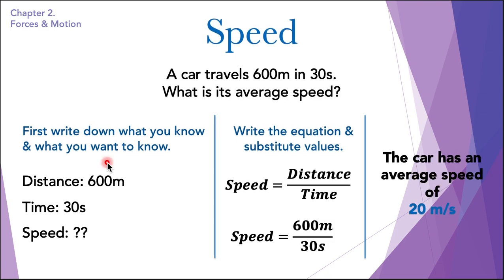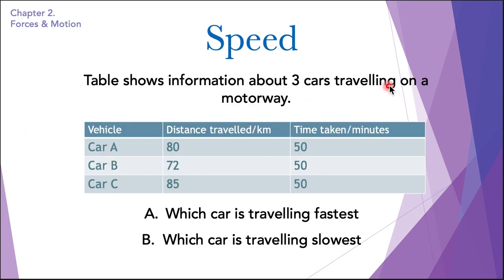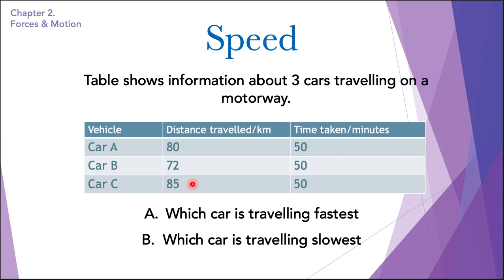Now let's answer a different type of question. A table shows information about three cars traveling on a motorway. The questions are: which car is traveling the fastest and which is traveling the slowest? Vehicle A covered 80 kilometers in 50 minutes. To find the fastest car, we will write the speed-distance-time equation and divide each car's distance by its time. The car with the greatest speed is fastest and the one with the lowest speed is slowest.